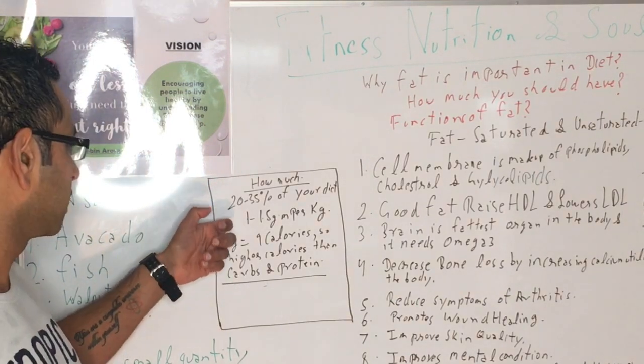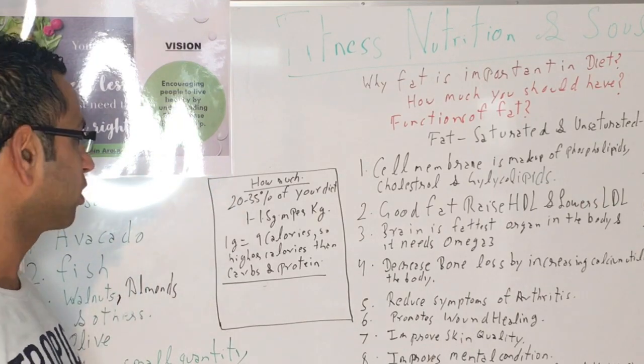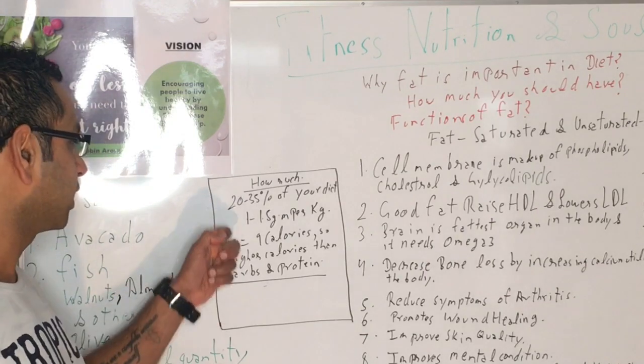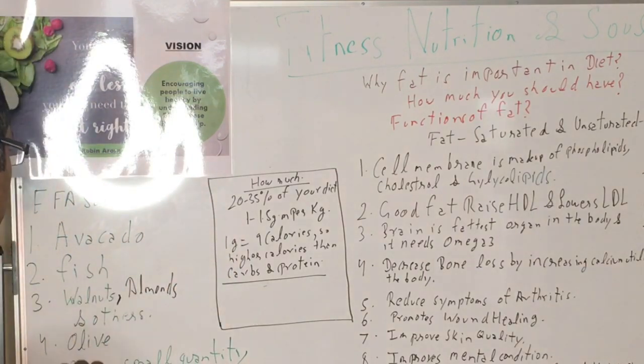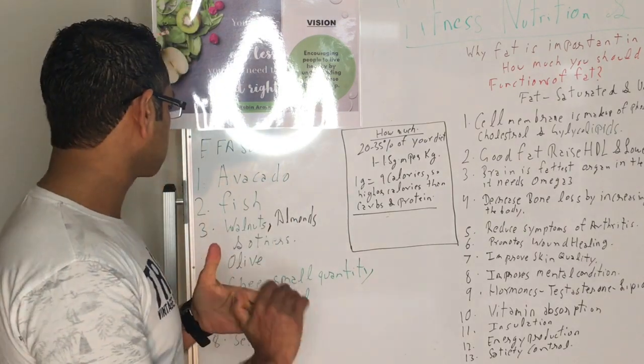Fat is very high in calories, so we need to be mindful when making a diet plan. So 20 to 25% of your diet, or if you're doing bodybuilding or want a simple formula, you can go from 1 to 1.5 grams per kilogram of your body weight if you're in a healthy range. If you're obese, you may need to change the numbers.